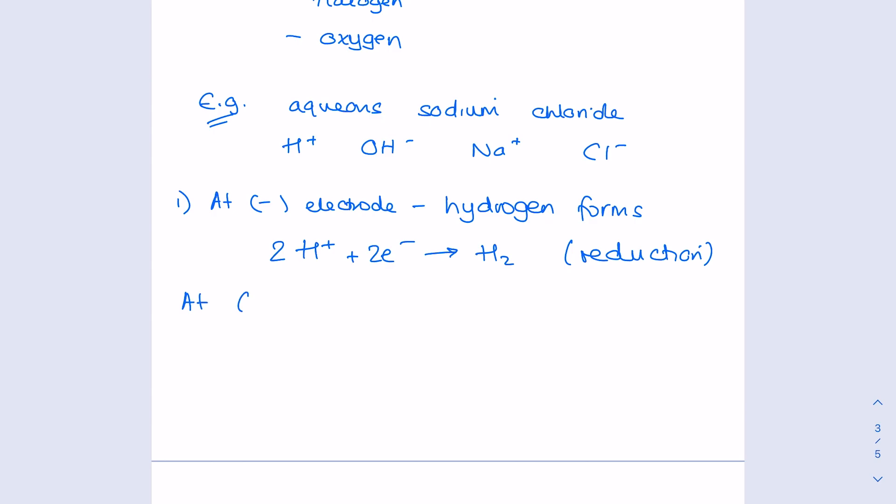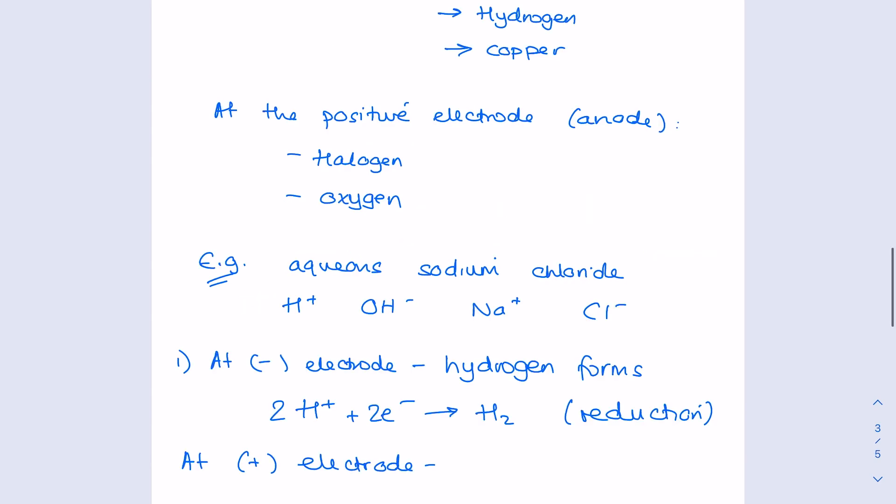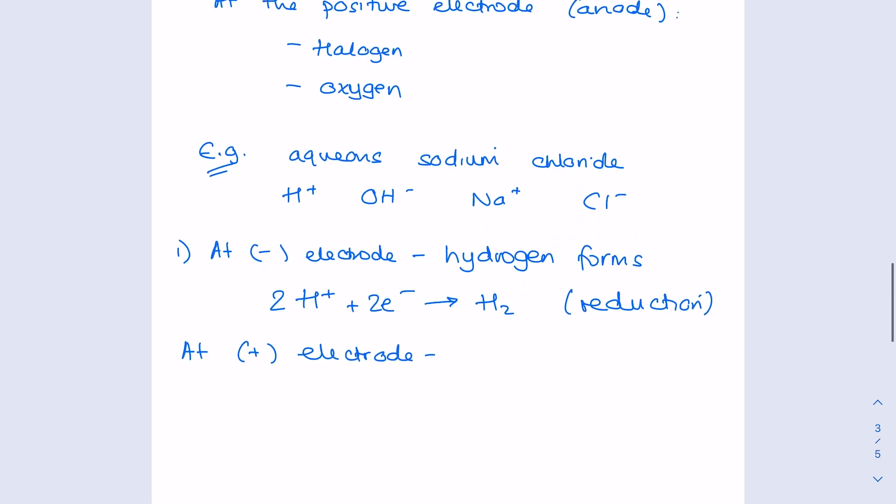What about at the positive electrode now? Remember, we said that the halogen forms preferentially. So, that's going to be the group seven elements. Chlorine is one of those. So, chlorine forms. So, there's our Cl-. We're forming a diatomic molecule Cl2. So, get it balanced. Because you want something neutral from something which is negative, you want to take away those electrons.